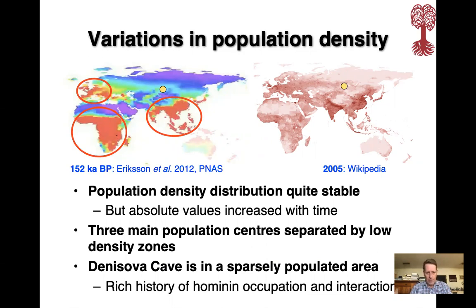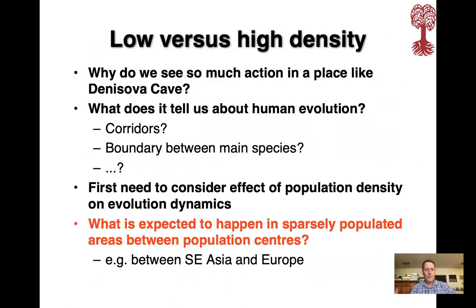Denisova cave is one of these famous sites, located in a sparsely populated area. The yellow dot on the maps shows that Denisova cave and such sites often display a very rich history of prominent occupation and interaction. So why do we have so much action in a place like Denisova cave? What does it tell us about human evolution? Was it on some corridor, or on the boundary between the main species?